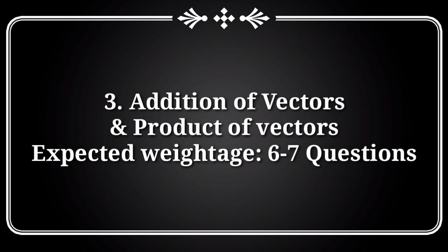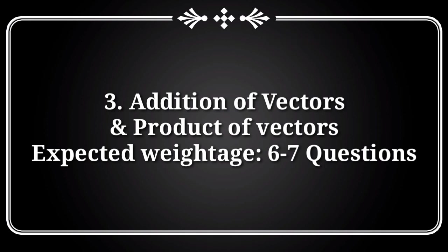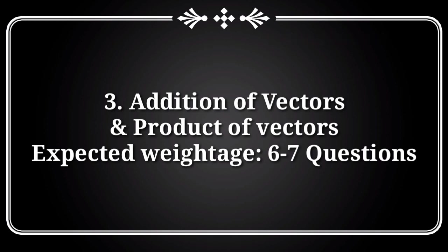After completing that, you should start with the chapters Addition of Vectors and Product of Vectors. By combining these two chapters, the weightage will be 6 to 7 questions in TSMS set or APMS set. The important topics from these chapters are angle of vectors, compound vectors, cross product, dot product, and the most important topic — triple product.